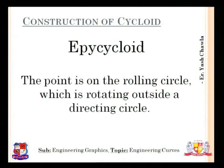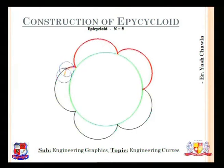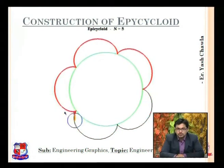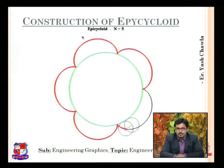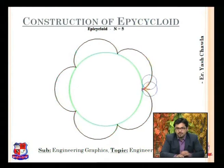Now moving on to the epicycloid. Here the point is on the rolling circle which is rotating outside a directing circle. So we have two circles: a smaller directing circle and a larger rolling circle. There is a continuous animation showing the epicycloid being generated — the green is the directing circle, blue is the generating circle, and the red curve is being traced by a point on the circle as it rotates around.